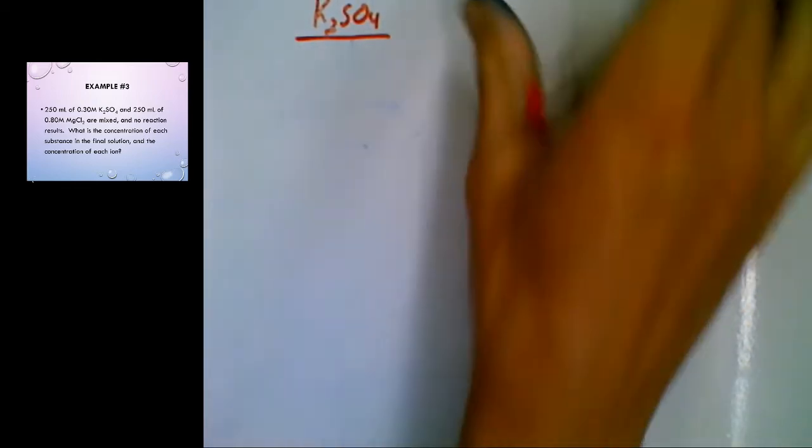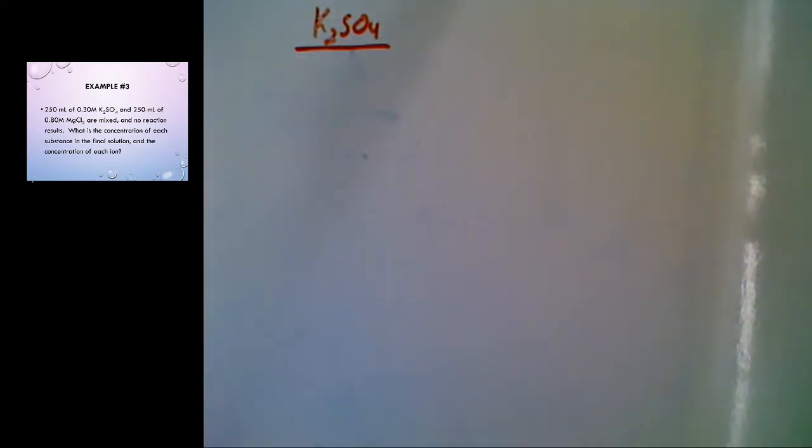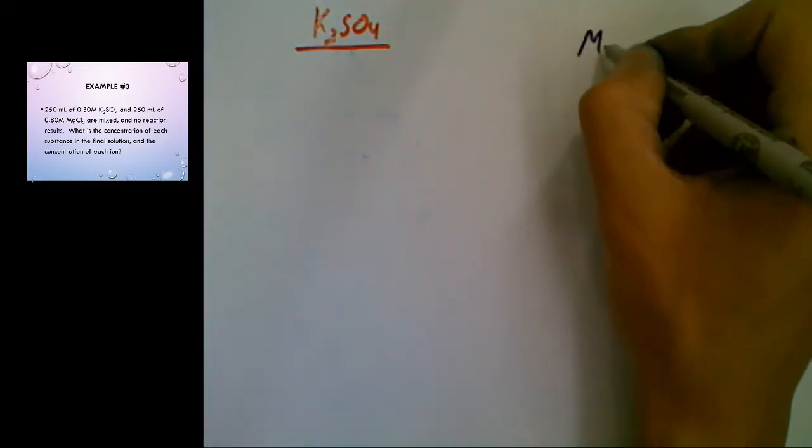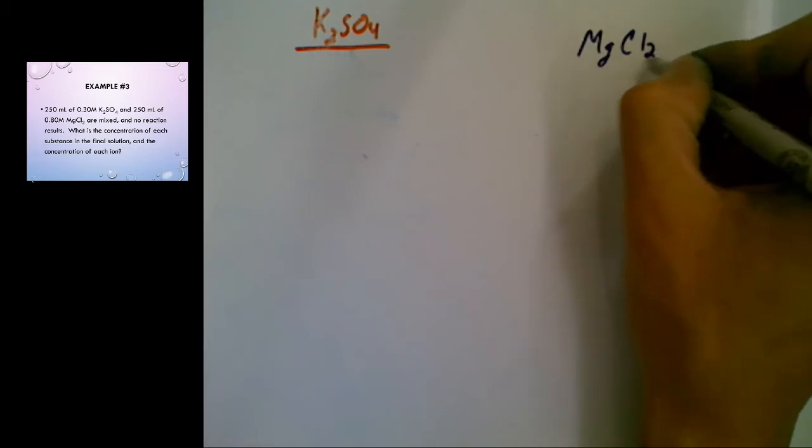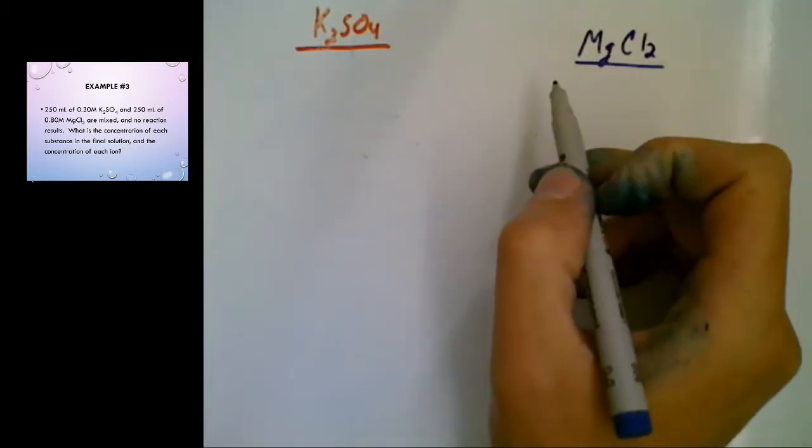So potassium sulfate is going to be my one substance that I work with on one side. My other substance, the magnesium chloride, I'm going to work with on the other side.